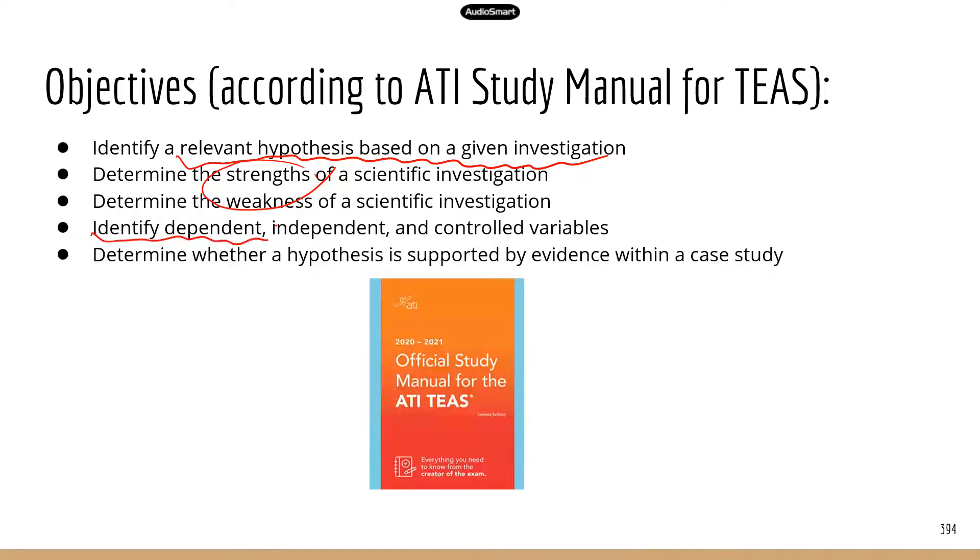So this is kind of similar to what we covered before, critique a scientific investigation. Maybe there is a bias. Maybe the sample size is too small. Maybe there's no appropriate control. Next is about the different variables we have talked about before.